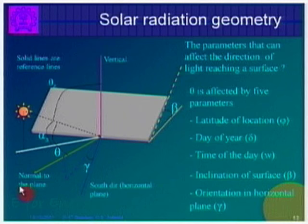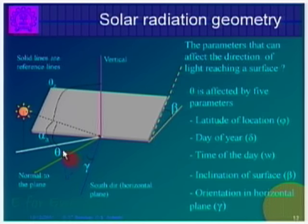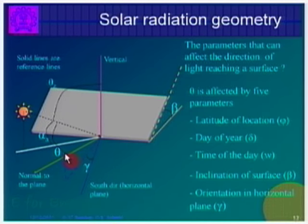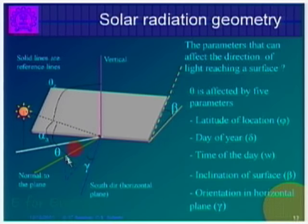To give a brief introduction: if you want to calculate the angle that the sun ray makes with respect to the normal to the plane — theta (θ) — the green line here is the normal to the plane, and this is the sun position. The angle theta between the normal to the plane and the sun ray is what is important. You want the value of this angle to be 0 at all times — morning, afternoon, evening, before noon, summer, winter, any time. If you want maximum collection, theta should be 0.